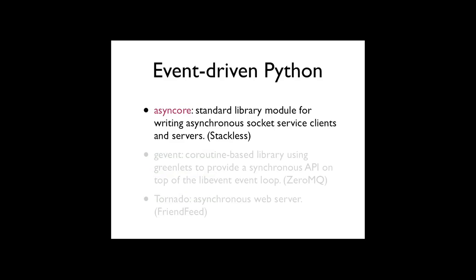A funny thing about Python, which you may know or may not know if you don't use Python regularly, is that Python — the core language — does not have built-in asynchronous I/O primitives. So if you come from JavaScript or some other language like that, you may think that's really funny. This is not something that the language has evolved yet, but it is a reality. This has meant that an interesting ecosystem of third-party libraries have evolved to handle event-driven programming and asynchronous I/O in Python.